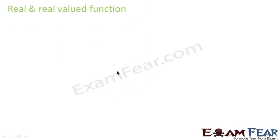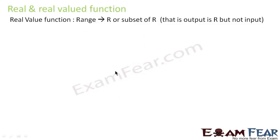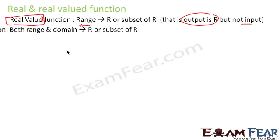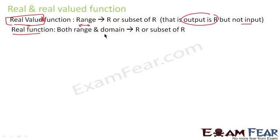Let's discuss what a real function and a real-valued function are. A real-valued function is a function for which the range is real numbers — that is, the output is real. The input may not be real. In a real function, both the input and the output are real — that is, both the domain and the range are real.